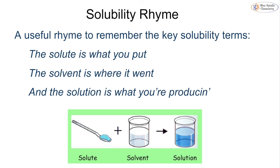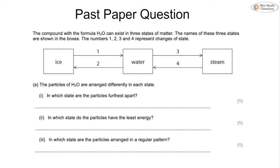A helpful rhyme to remember these key terms: the solute is what you put, the solvent is where it went, and the solution is what you're producing. These are very common terms in chemistry but are also very commonly mixed up, so make sure you know the difference between solute, solvent, and solution.